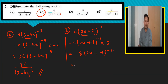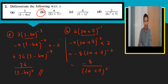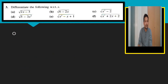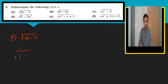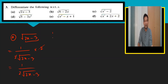For case two with radical form — for example differentiating under-root of (2x minus 3) — we use one upon two under-root, copy the whole thing, then multiply by the inner differentiation, which is 2. The 2 in the numerator and 2 in the denominator cancel out, giving the final answer 1 over under-root of (2x minus 3).